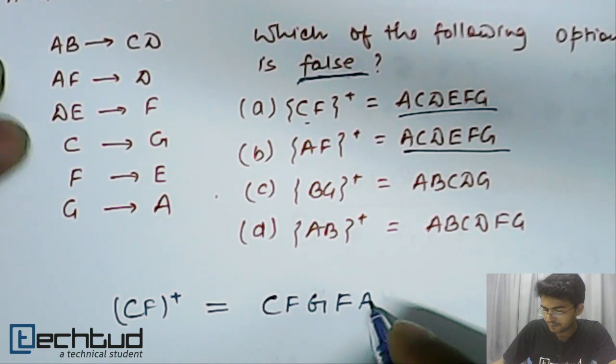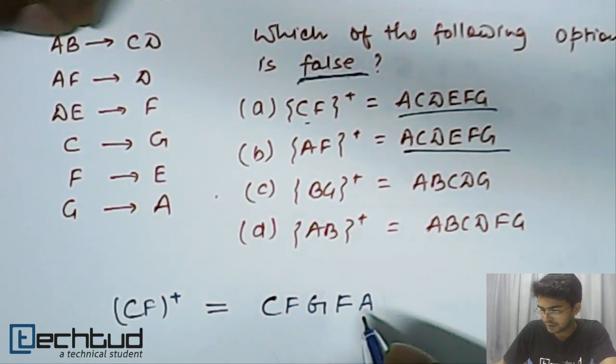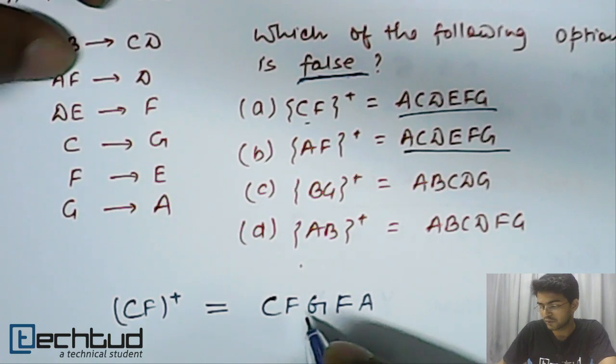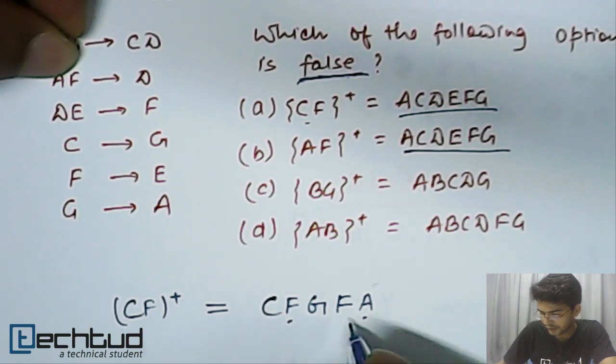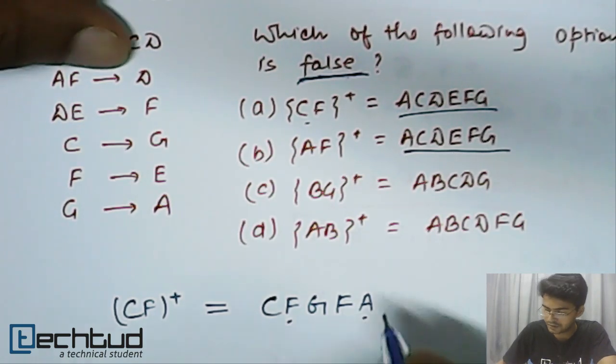So, now we have A. Now, we will see A and B. This will not work because we don't have B here. Now, A and F. This will work because we have A and F.